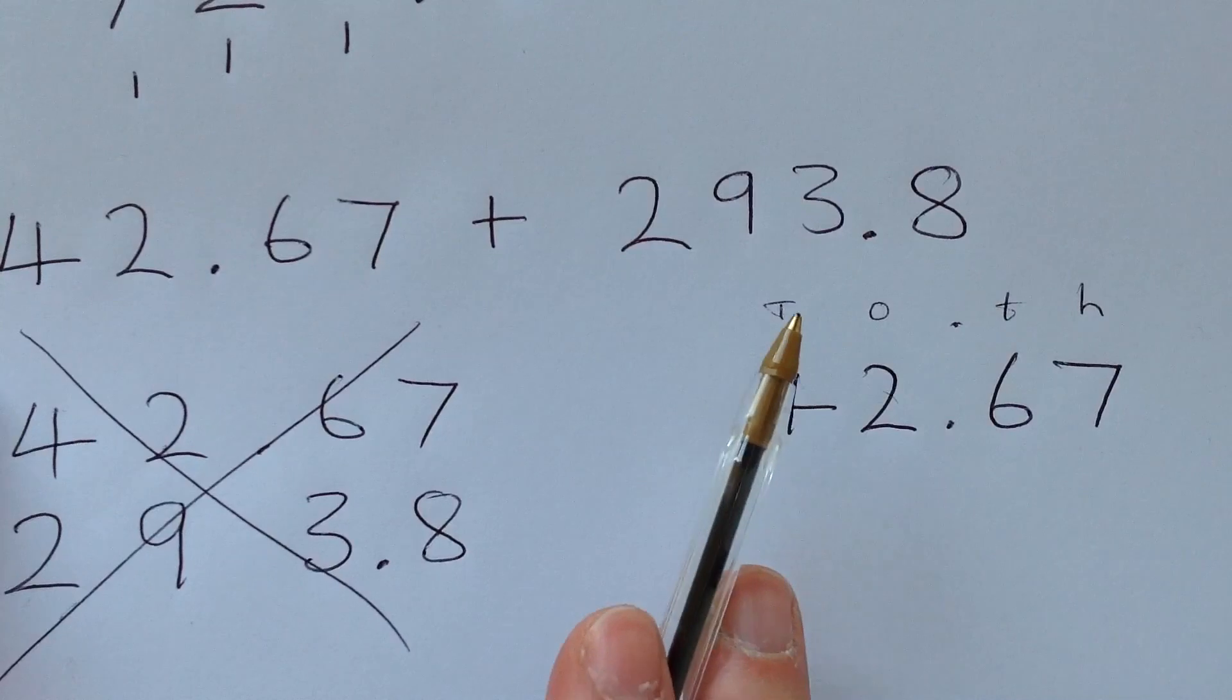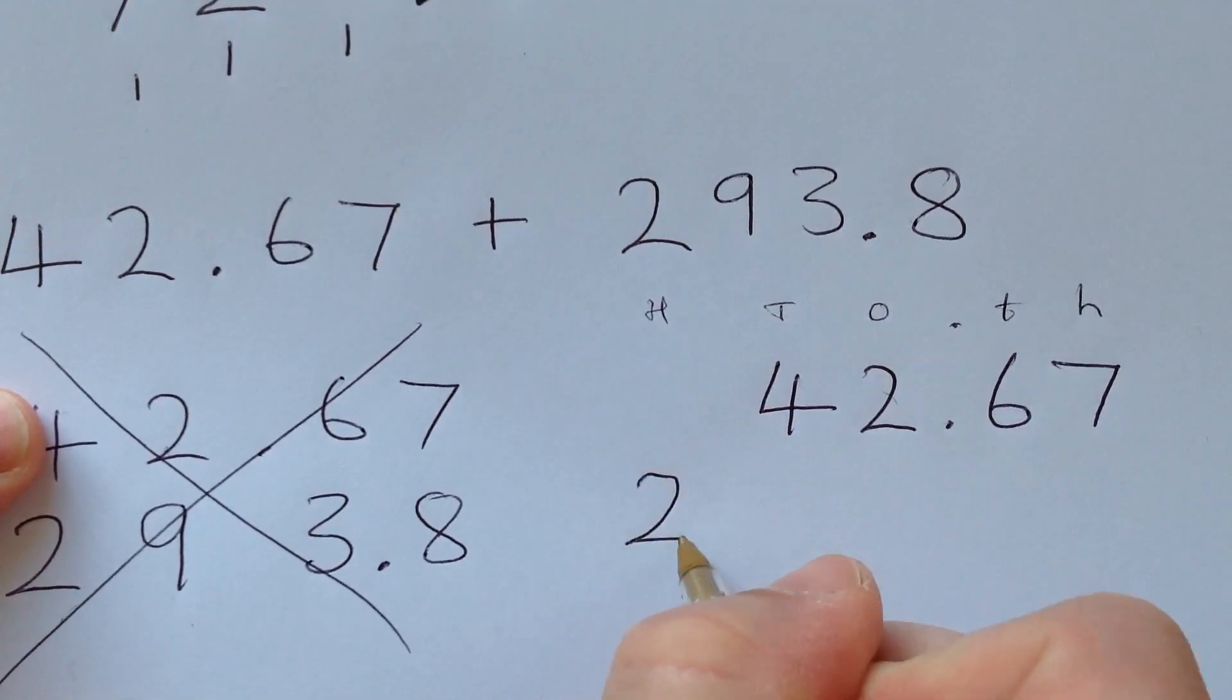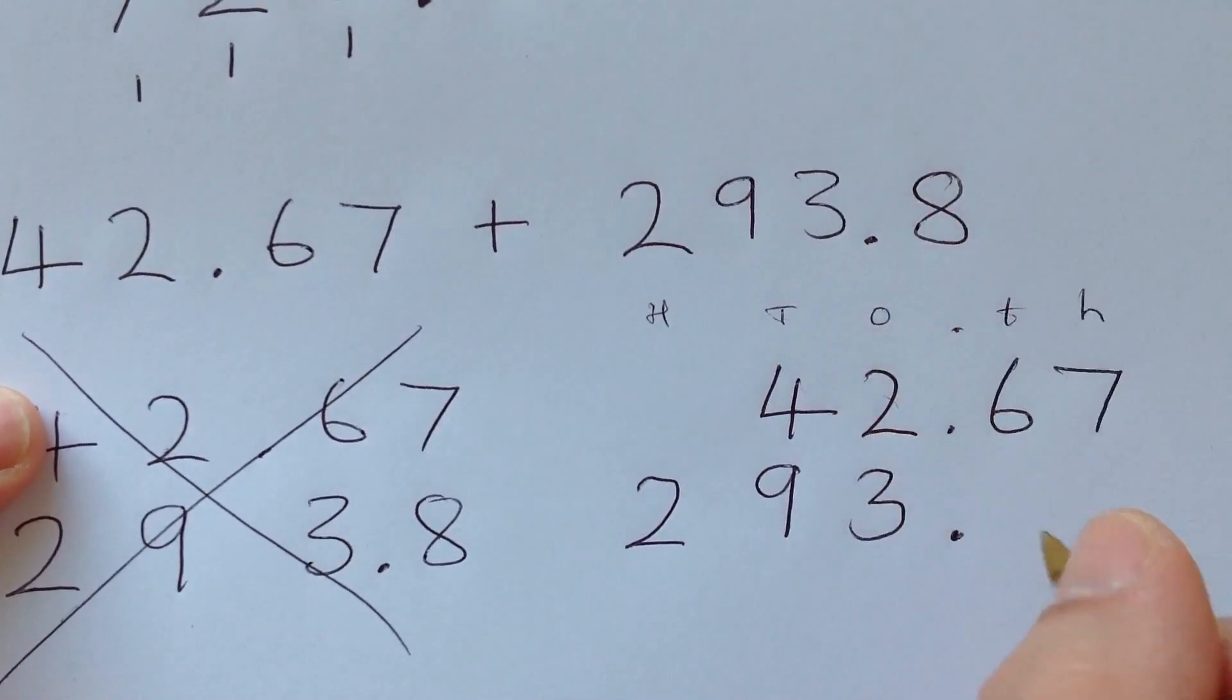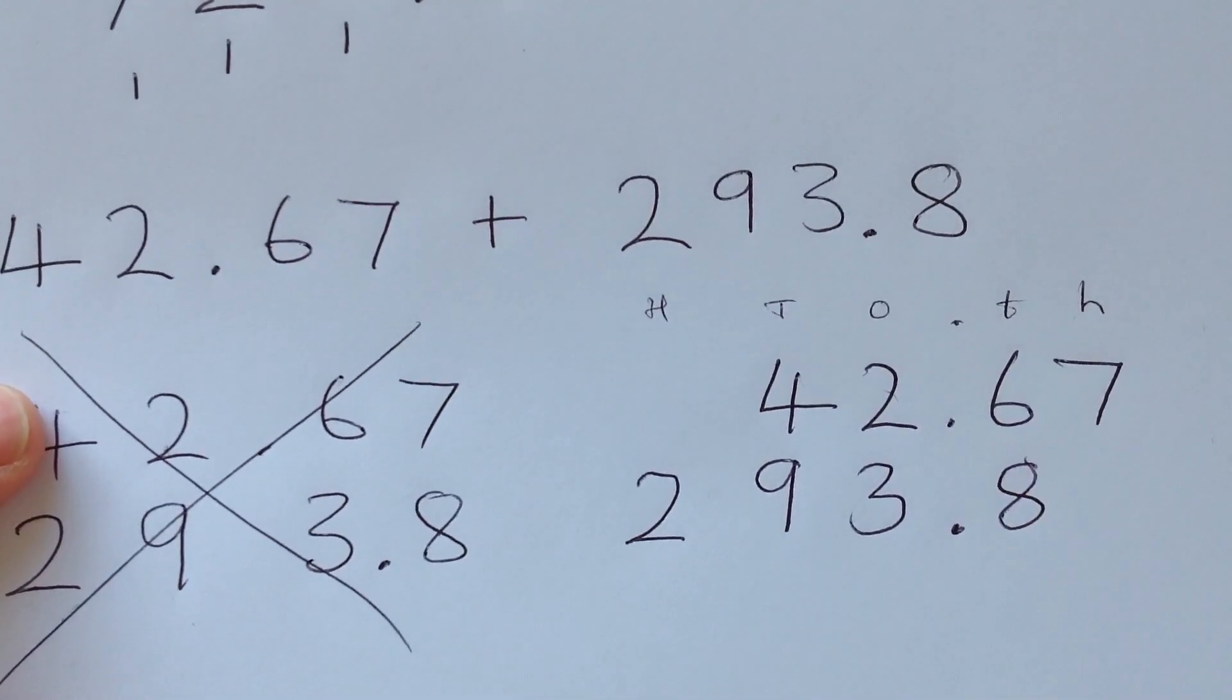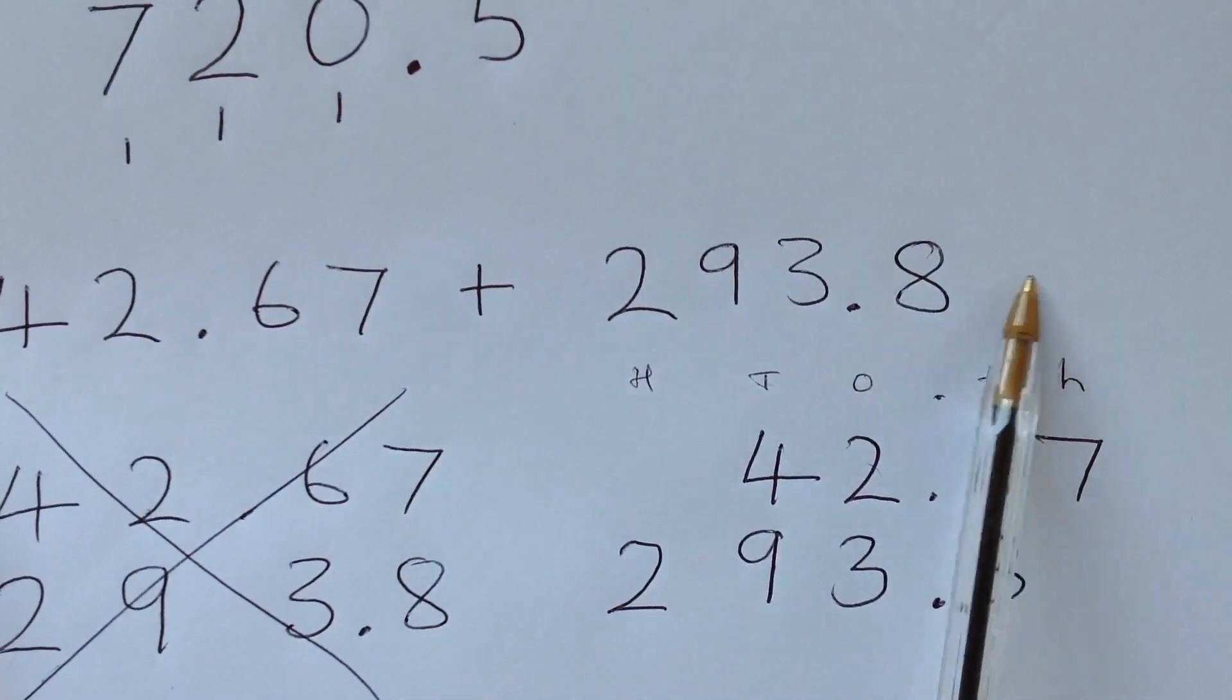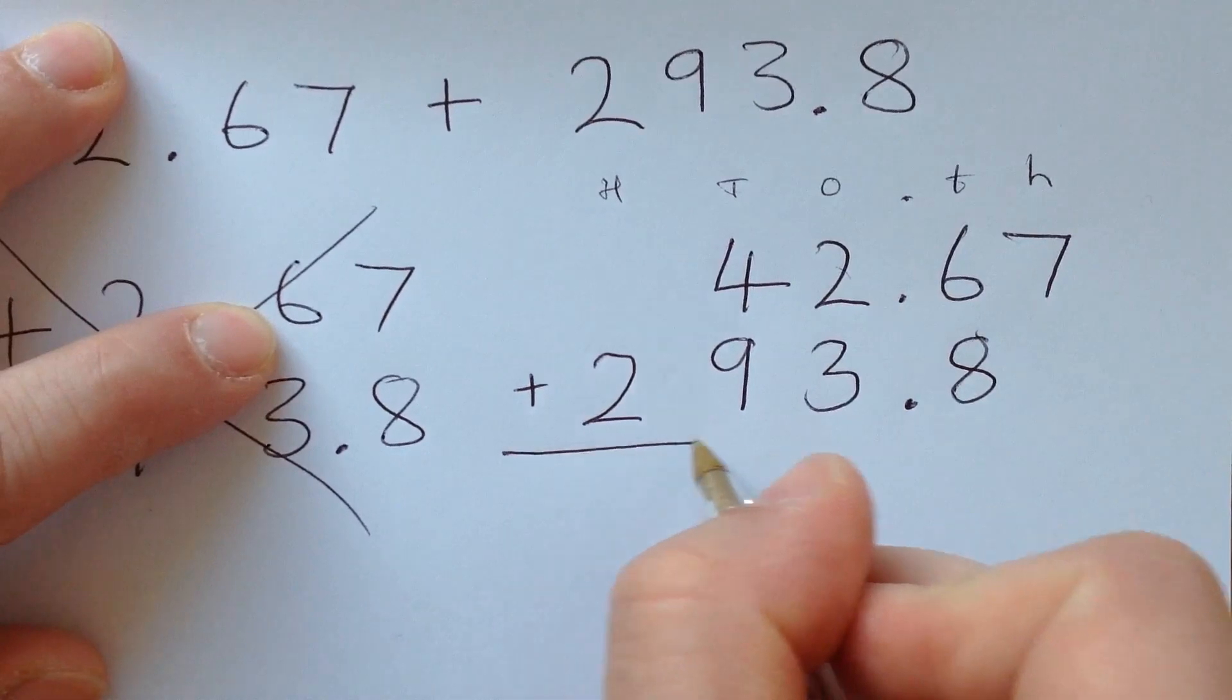But then when I add the number 293.8, well, I need a hundreds column. So I've got 200, the nine tens, three ones, the decimal points now line up perfectly, and I put in my eight tenths. I've got no hundredths on this number. When I look at this question, I've got no hundreds over here, and I've got no hundredths over here. So they're not going to line up perfectly. But that's fine, because I can still do my addition problem.